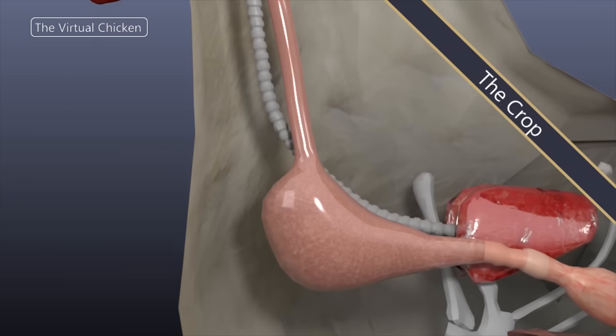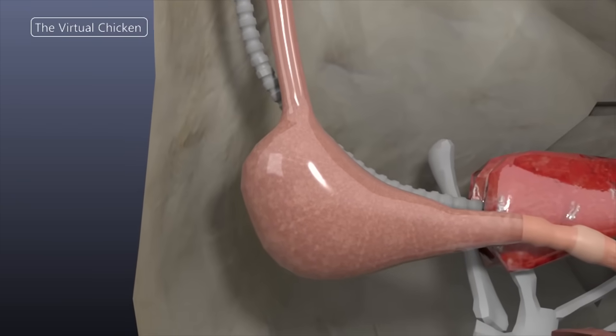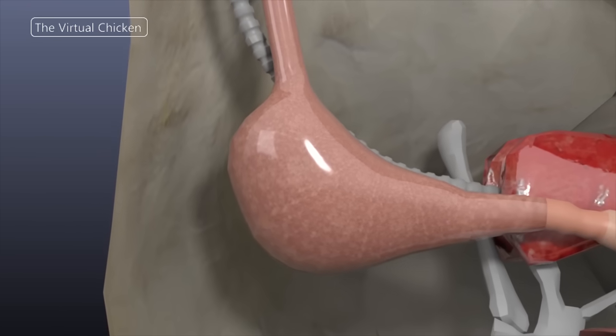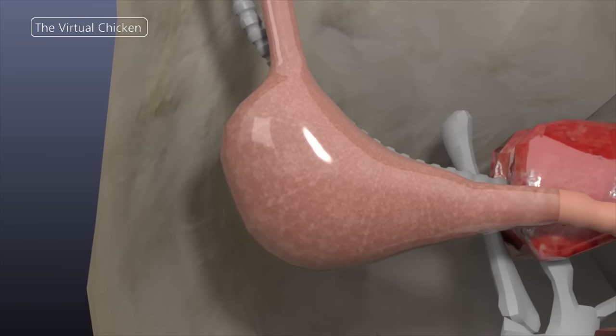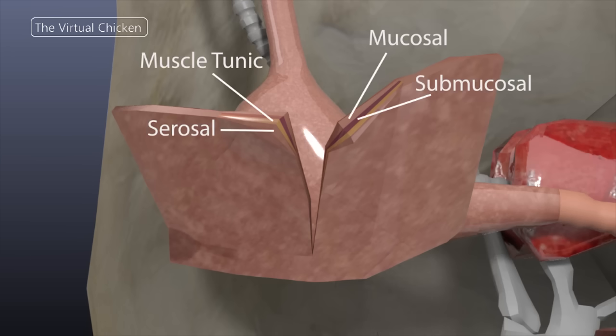In the chicken digestive system, the crop is an extension of the esophagus. It's a thin-walled pouch at the base of the thoracic section of the esophagus. The walls and lining of the crop are made up of the same four layers as the esophagus: the mucosal, submucosal, muscle tunic, and the serosal layer.